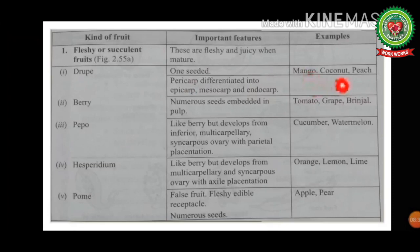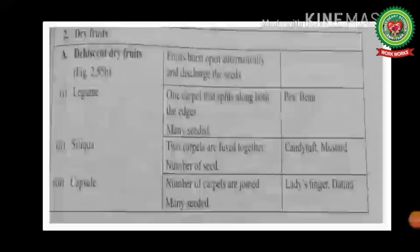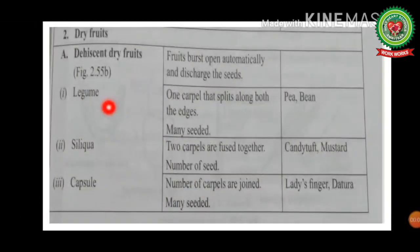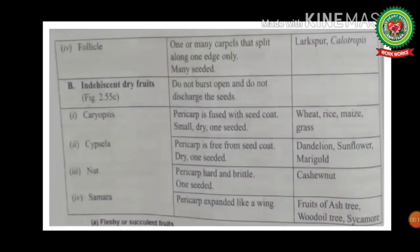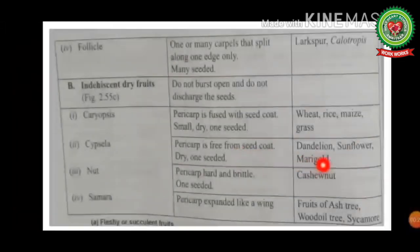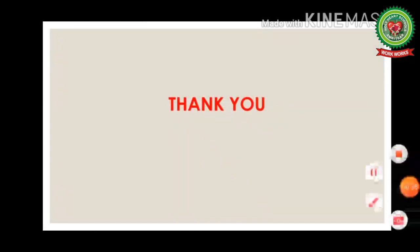To summarize the kinds of fruits: fleshy fruits include drupes such as mango, coconut, and peach; and berries such as tomato, grape, brinjal, and pepper, with cucumber as an example. Dry dehiscent fruits include legumes such as pea and bean, silicles such as candytuft and mustard, and capsules such as lady's finger and datura. Indehiscent dry fruits include caryopsis such as wheat, rice, and maize; cypsela such as dandelion and sunflower; nuts such as cashew; and samara such as fruits of the ash tree.